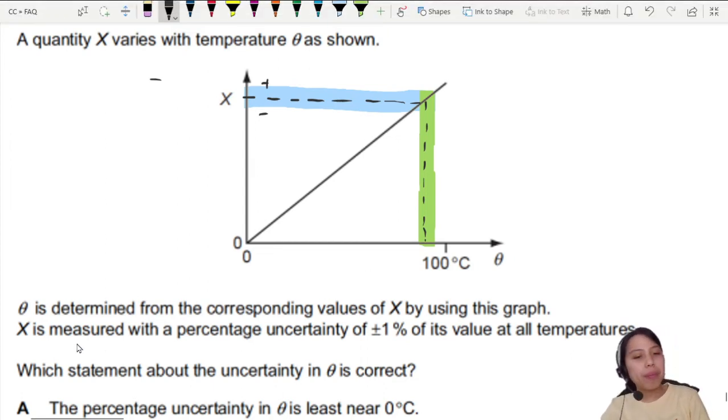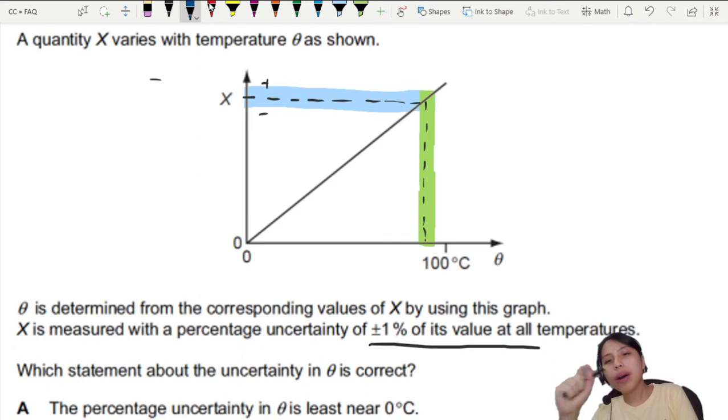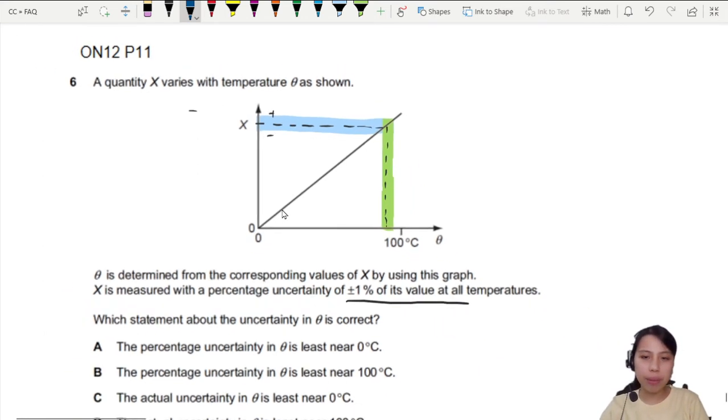So which statement is true about this uncertainty? One percent at all temperatures. That's a pretty important clue. One percent at all temperatures. What does that mean? Let's go and look at the choices we have down here first.